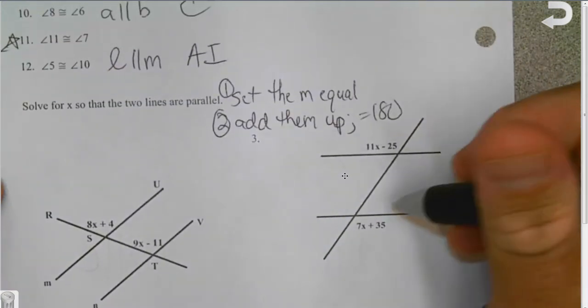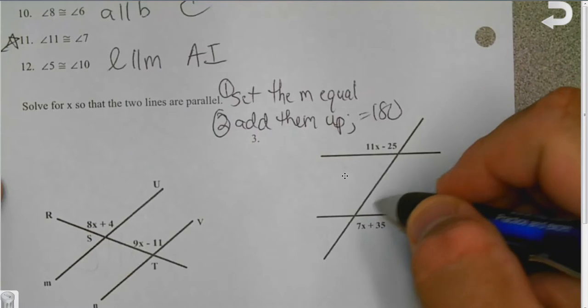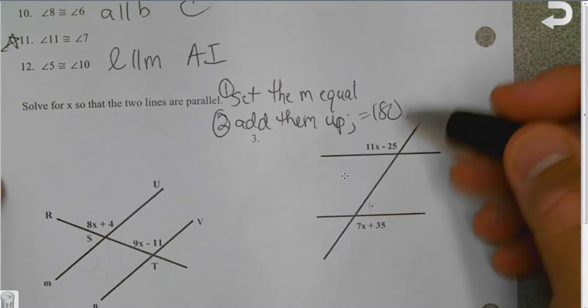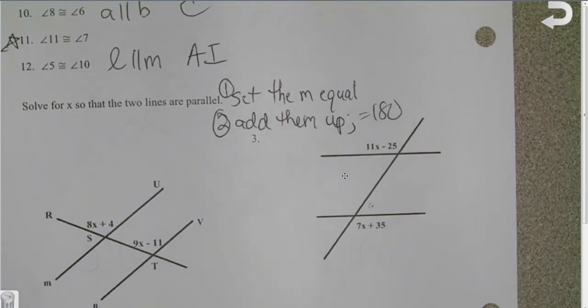It's that simple. If the 7x plus 35 would have been here, then you would have added them up. But since they're congruent, you go ahead and put them, set them equal to each other, solve for x. And then you can figure out the angle measures.